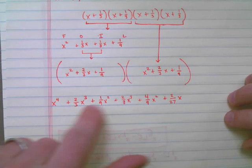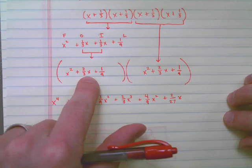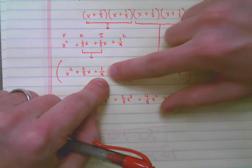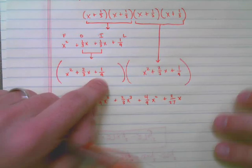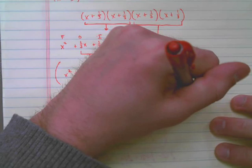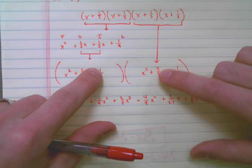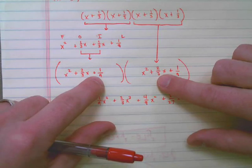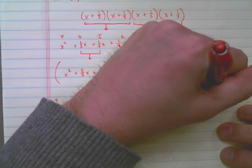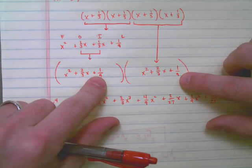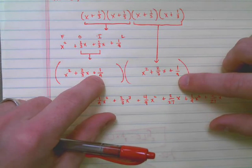So now I've got one, two, three, four, five, six. I'm done with the first two. I need to get my last three by distributing the one-ninth. One-ninth times x squared gives me one-ninth x squared. One-ninth times two-thirds x would give me two over twenty-seven x. And one-ninth times one-ninth is one over nine times nine, which is eighty-one.